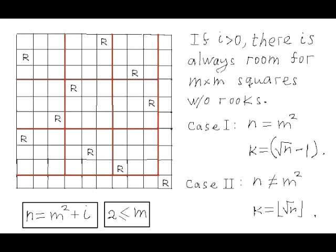Conclusion. If n is not a perfect square and n is greater than m squared, then every peaceful configuration of rooks has room for an m by m square region which does not contain any rooks. On the other hand, we have proved that if n is a perfect square, then there exists a peaceful configuration of rooks that does not leave any room for an m by m square containing no rooks. From that it follows that there are two cases: when n is a perfect square, k equals the square root of n minus 1; and if n is not a perfect square, then k equals the largest integer whose square is less than n.